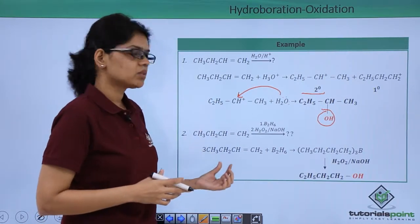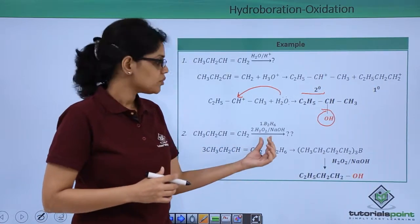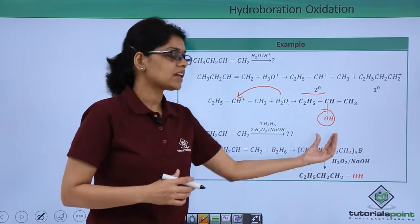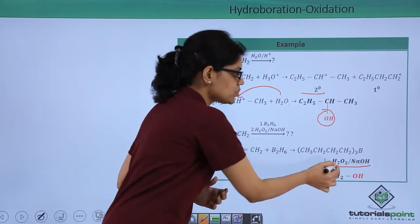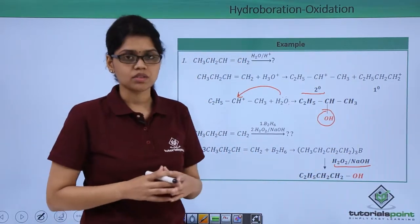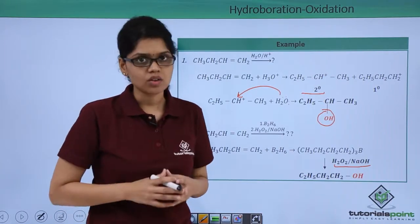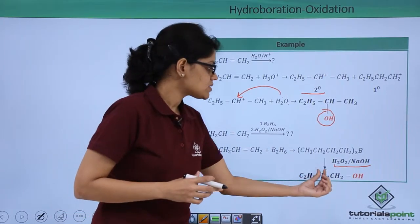In that reaction, what we do is we react three molecules of our alkene with B2H6 to get trialkyl borane which in the second step undergoes oxidation with H2O2 and NaOH to give three molecules of alcohol which is C2H5CH2CH2OH.